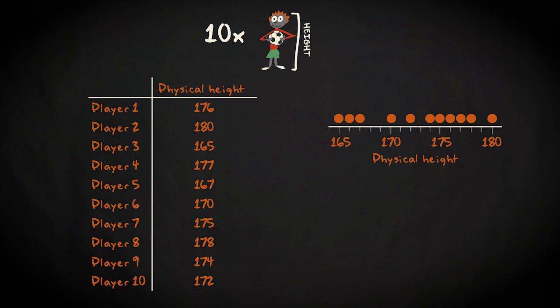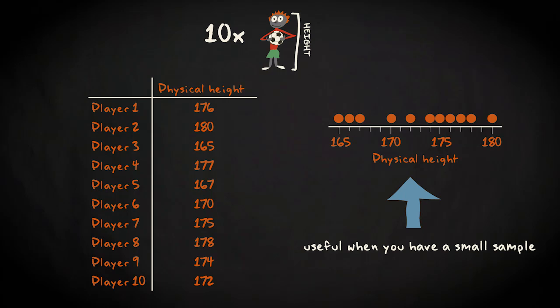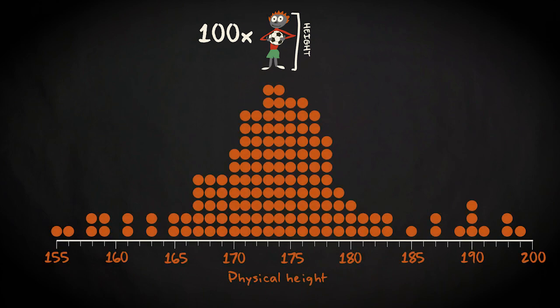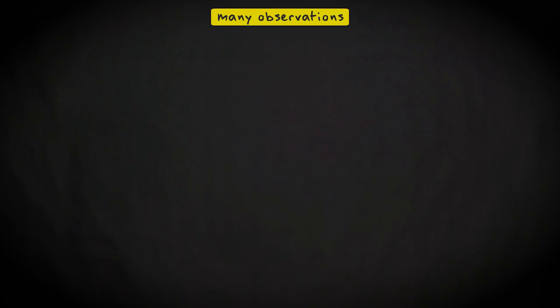You can imagine that a dot plot is useful when you have only a couple of observations. However, it becomes messy when you have a large sample. With a sample of 100 players, it would look something like this. If we have many observations, researchers therefore usually make use of another type of graph: the histogram.